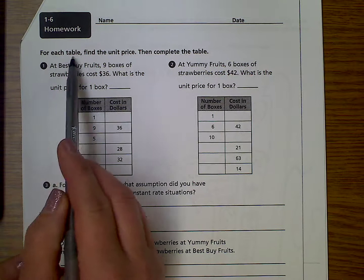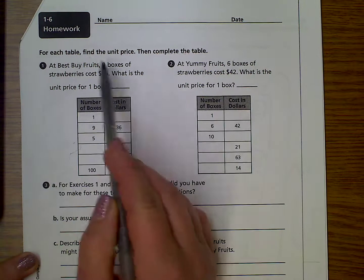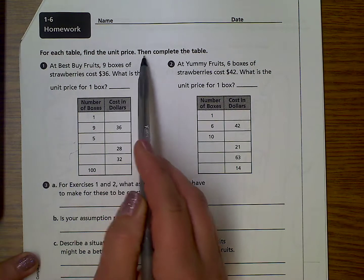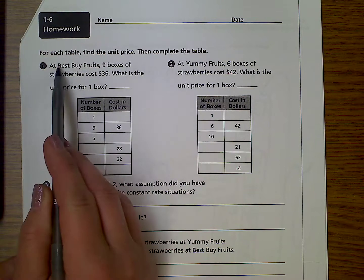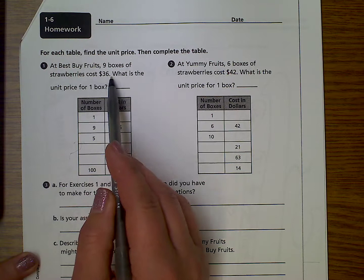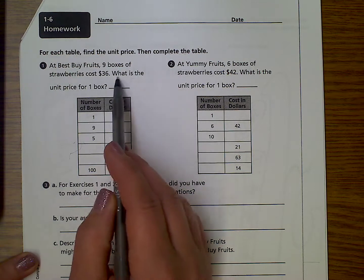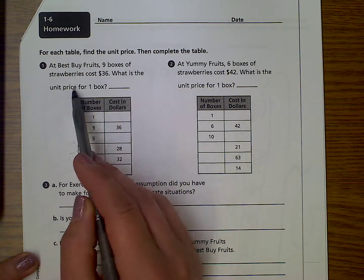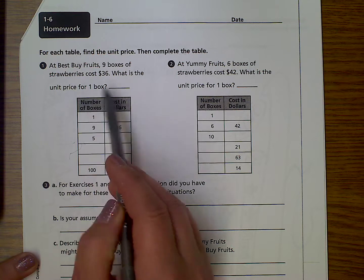For each table, which is this, find the unit price, then complete the table. At Best Buy Fruits, 9 boxes of strawberries cost $36. What is the unit price for 1 box?